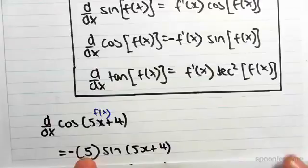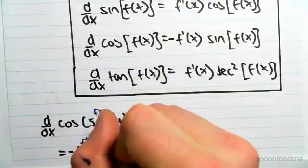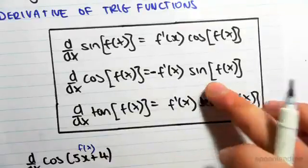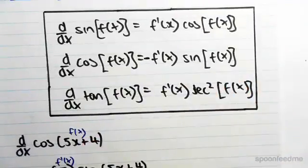So it's minus f'(x), sine, so the cos changes to a sine, f(x). And f(x) is just 5x + 4.